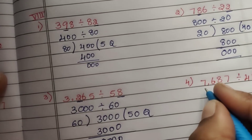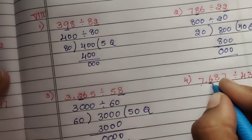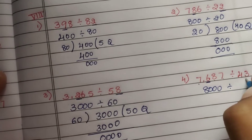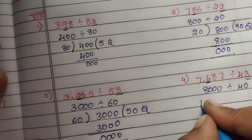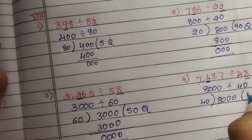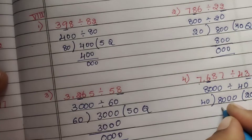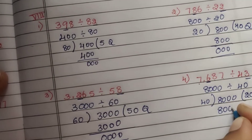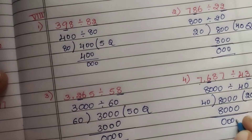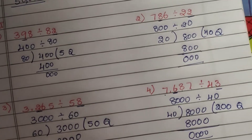Fourth question: 7,687 divided by 43. Digit 6 rounds 7,687 up to 8,000. Digit 4 rounds 43 down to 40. Divide 8,000 by 40: 4 twos are 8, so 40 into 20 is 800; adding a zero gives 8,000. The quotient is 200.